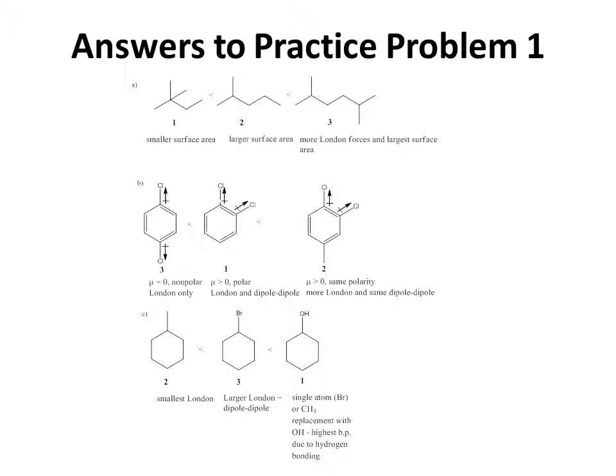Answers to Practice Problem 1. In Part A, compound 1 has a smaller surface area than isomer 2, thus compound 1 has a smaller boiling point. Compound 2 comes next, and then compound 3, which has additional carbons and hydrogens giving it both a larger surface area and greater London forces. Thus compound 3 has the highest boiling point.